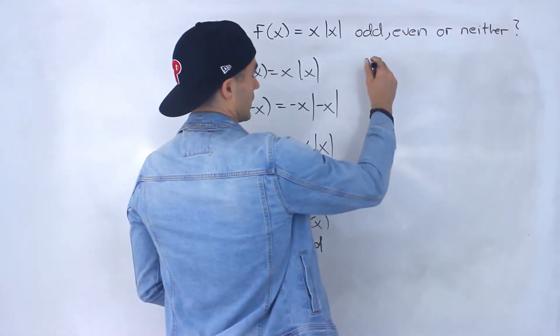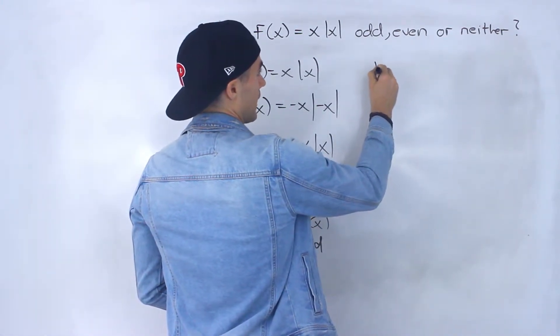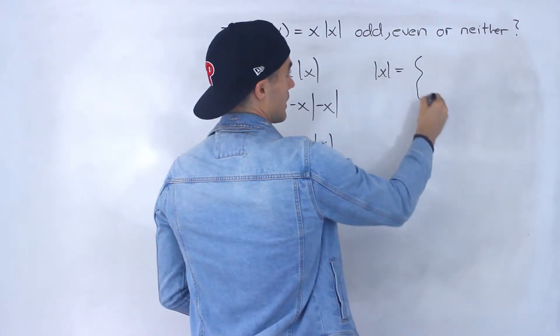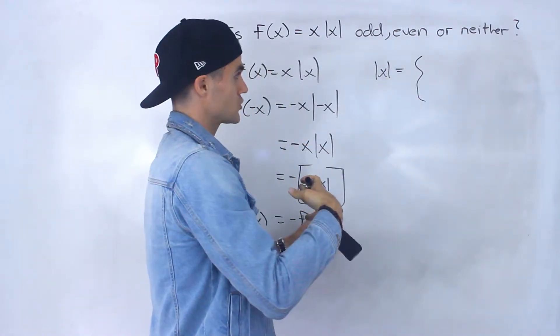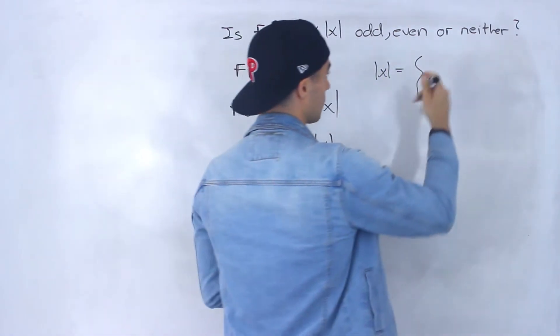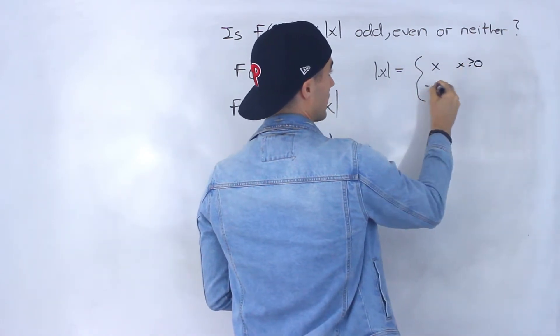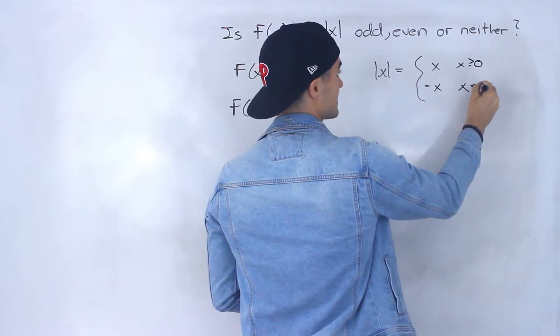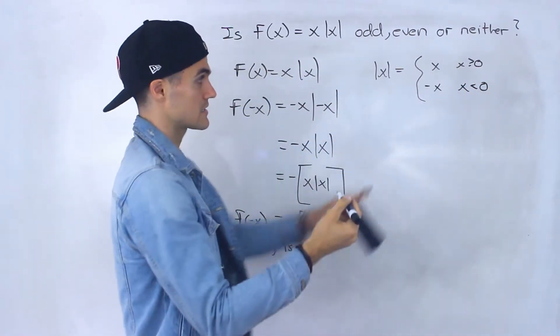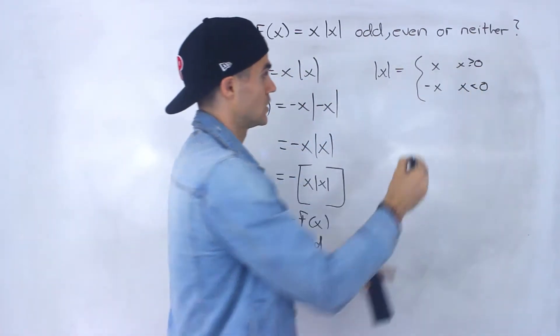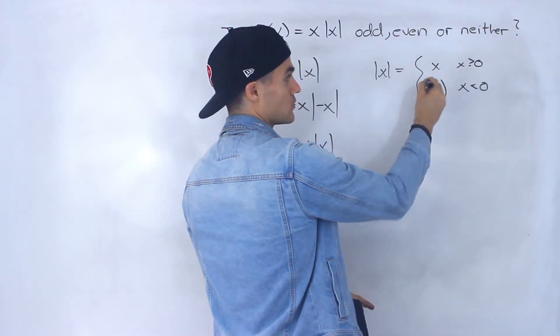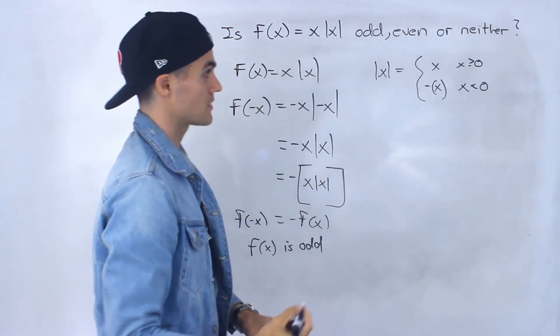...what we can do, we know that absolute value x, if we split it up into a piecewise function, that's going to be positive x when x is greater than or equal to 0 and then negative x when x is negative. Right, because the negative we're gonna have to change to a positive. So we take that negative value multiplied by negative 1 changes it to a positive.